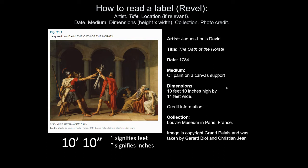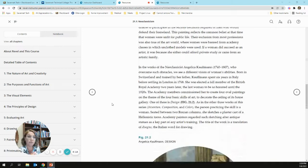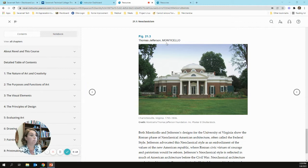Here's how to read a label. The information is presented in this order. First, it gives you the artist's name — in this case, Jacques-Louis David. Then the title of the piece, which needs to be in standard capitalization and italics: The Oath of the Horatii. Sometimes after that it will give you a location. Let me scroll down in your textbook to show you a work of art where that is the case.